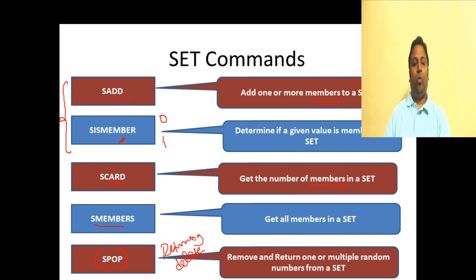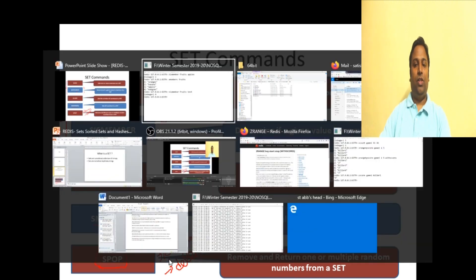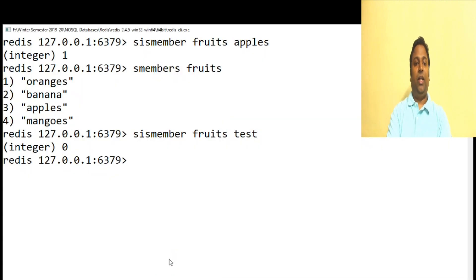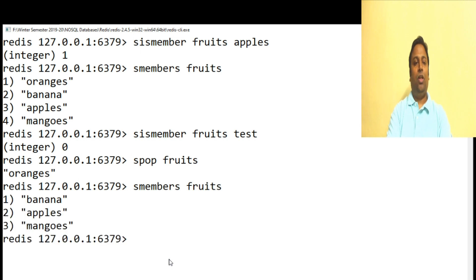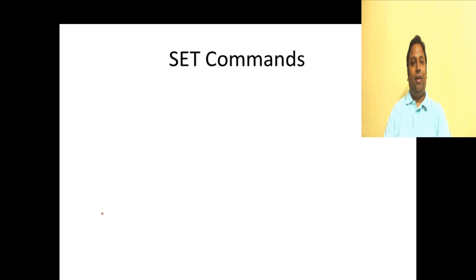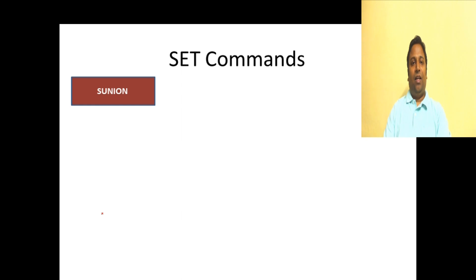Now let's look at SPOP. Pop means returning and deleting an item from the set, and it returns a random item. We just give SPOP and then the set name. It has popped oranges out. If we check SMEMBERS fruits, oranges are no longer part of the set.